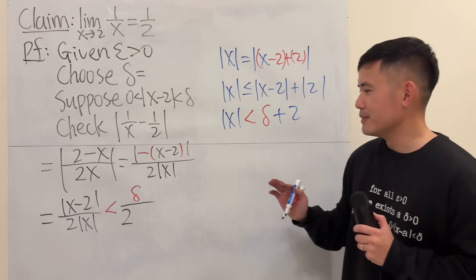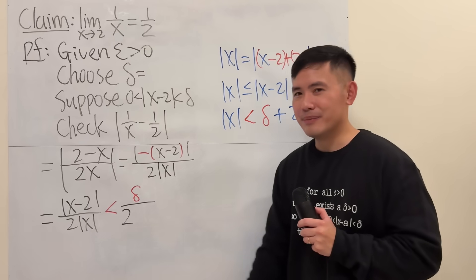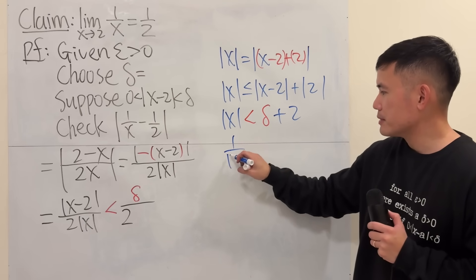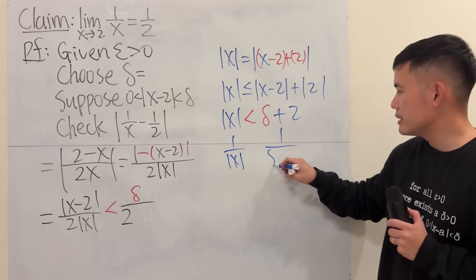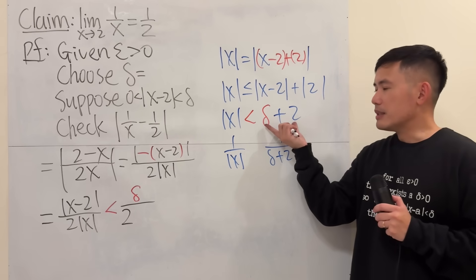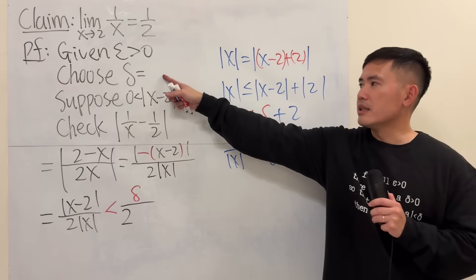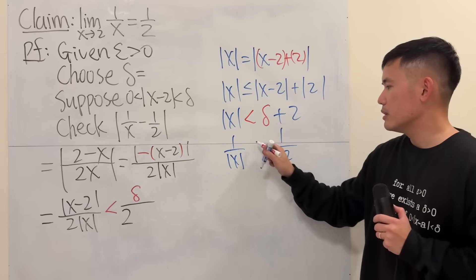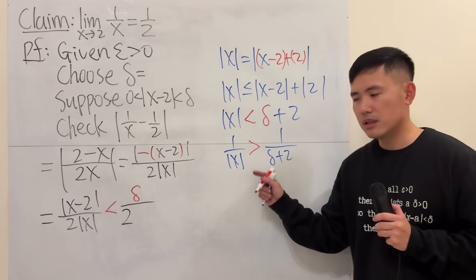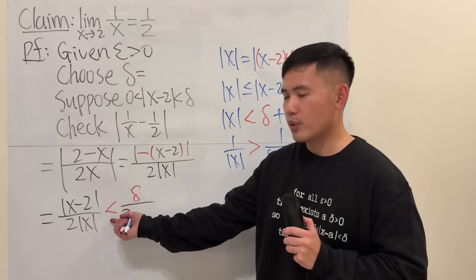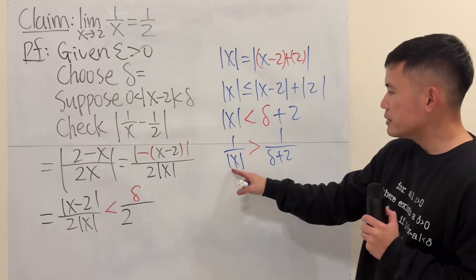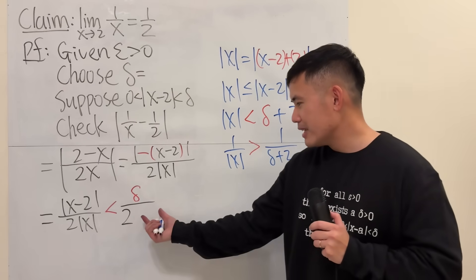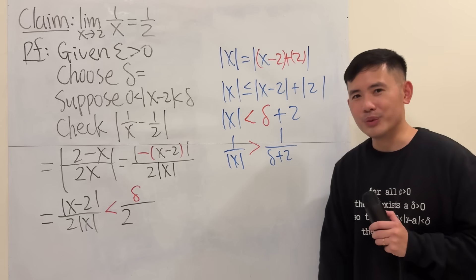Here's the problem: absolute value of x is on the bottom. If we take the reciprocal, 1 over absolute value of x is 1 over (delta plus 2). But when you take the reciprocal of both sides you have to flip the inequality, so 1 over absolute value of x is greater than 1 over (delta plus 2). That doesn't agree with what we want — we can't just put delta plus 2 on the bottom.